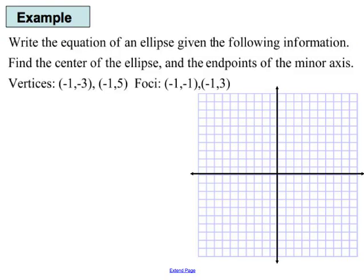Let's start with finding an equation. We're given some clues, and what we're going to do is take these clues, put them into what we know, and maybe even graph it to make sense of the problem. The vertices are at negative 1, negative 3 and negative 1, 5. So these are my two vertices.